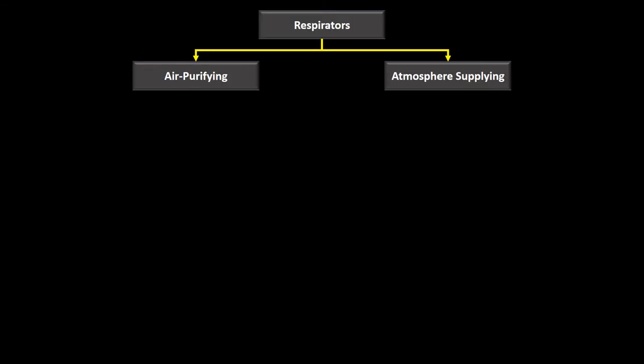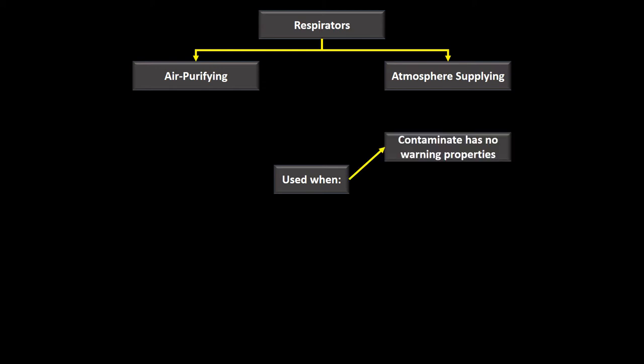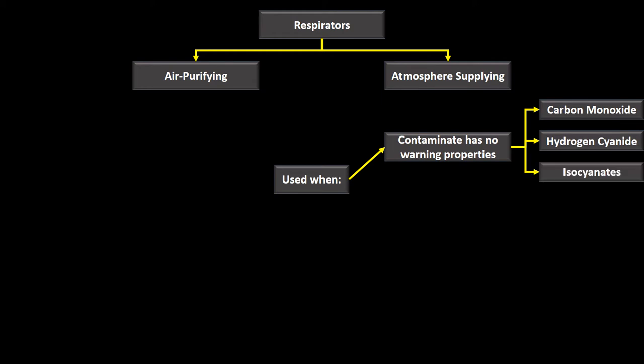Now for atmosphere supplying respirators. These must be used whenever a contaminant has no warning properties — no odor or sensory cue to indicate its presence. Contaminants mentioned in this chapter with no warning properties include carbon monoxide, hydrogen cyanide, isocyanates, and methyl alcohol.